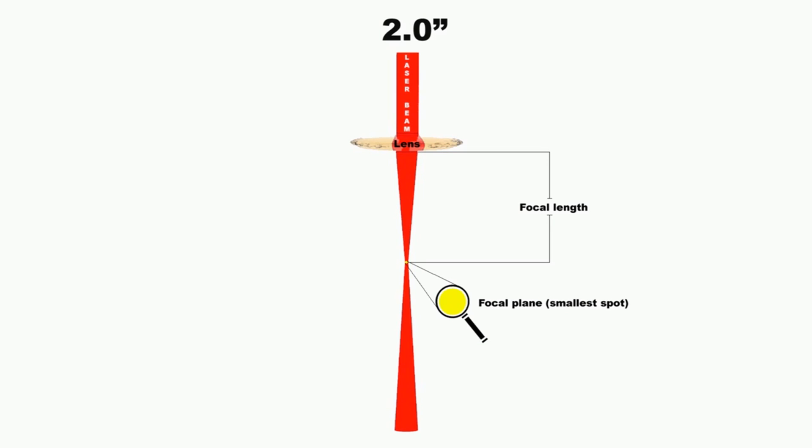The focal plane, or focus point, is the smallest diameter of the laser beam between convergence and divergence. So when you're focusing onto the material, you're setting the distance between the lens and the material to this point. The distance here is referred to as the depth of focus, which is basically a tolerance in which the beam diameter will not change much.